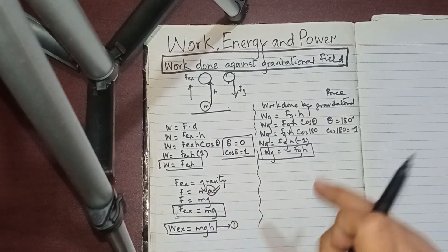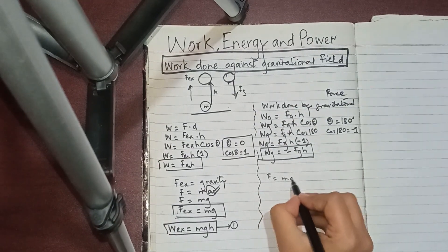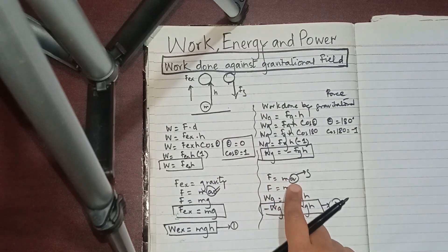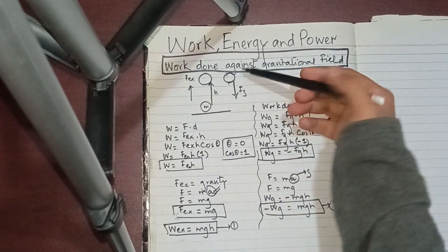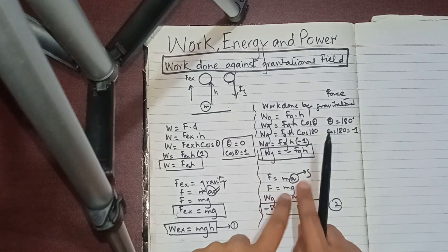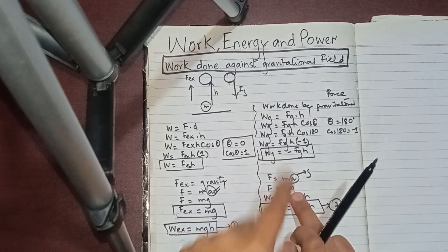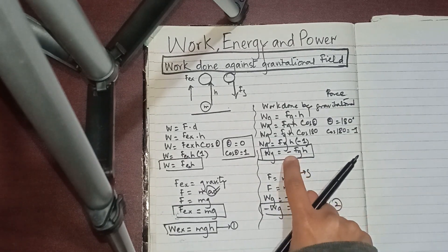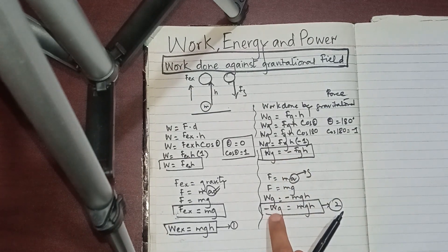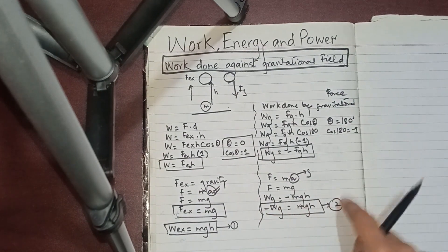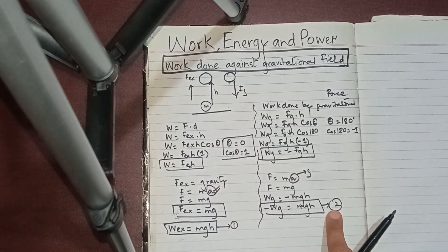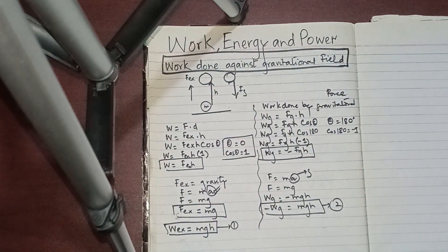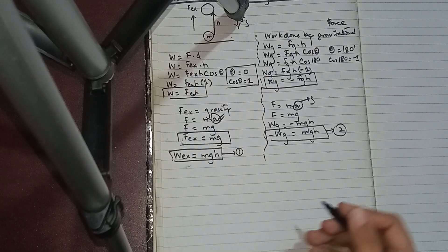Applying Newton's second law again, F = ma, and since acceleration is due to gravity, the gravitational force = mg. Substituting: work done by gravity = −mg × h = −mgh. Rearranging, we can write: minus the work done by gravity equals mgh. We label this Equation 2. Now we will compare Equation 1 and Equation 2.